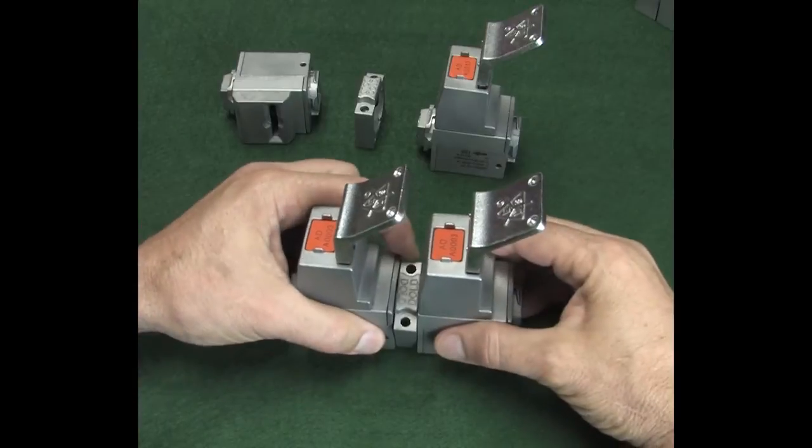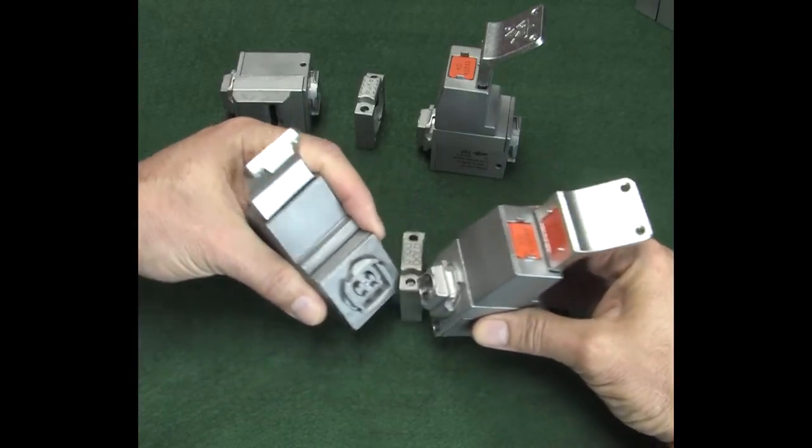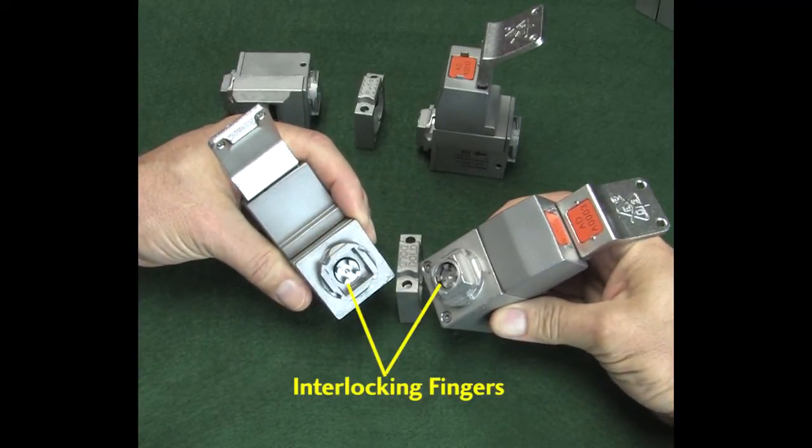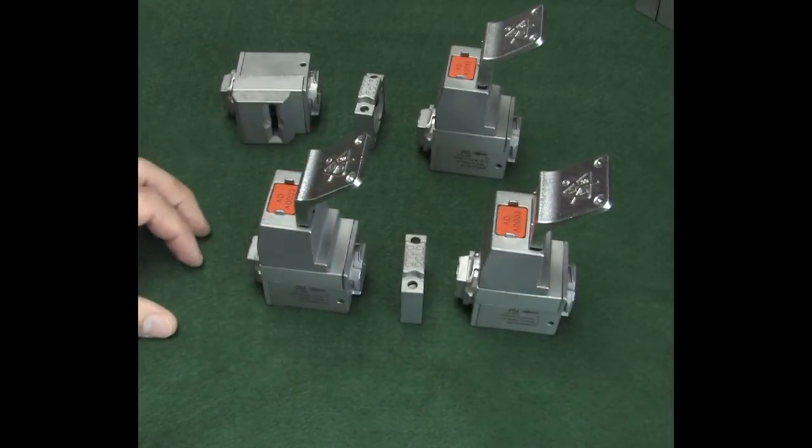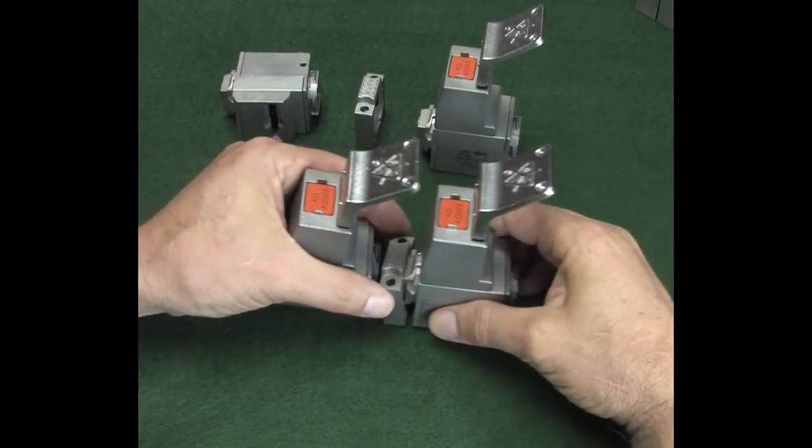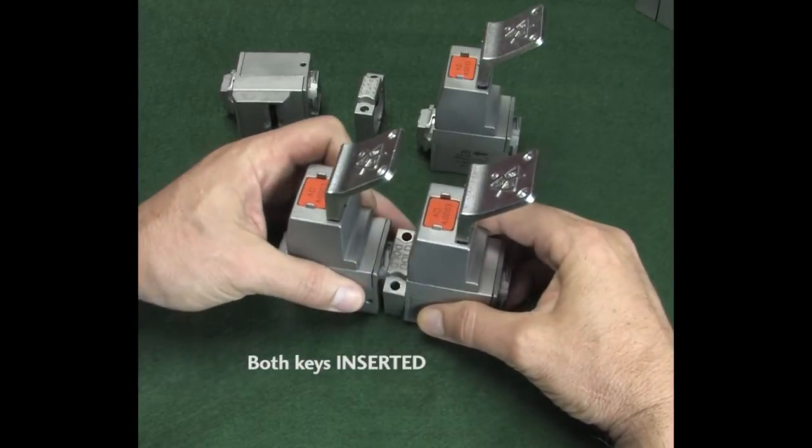Keep in mind, both modules have to be in the same state or these little interlocking fingers won't line up. For example, to stack two of these 0-1 key modules, they both need to have keys in for them to mate, or both need to have keys out for them to mate.